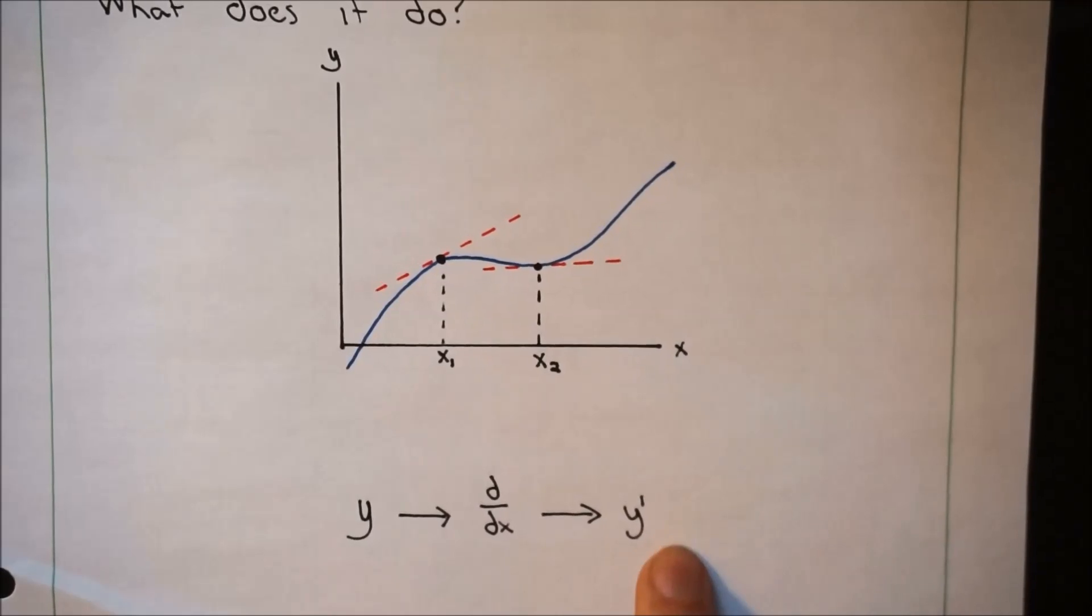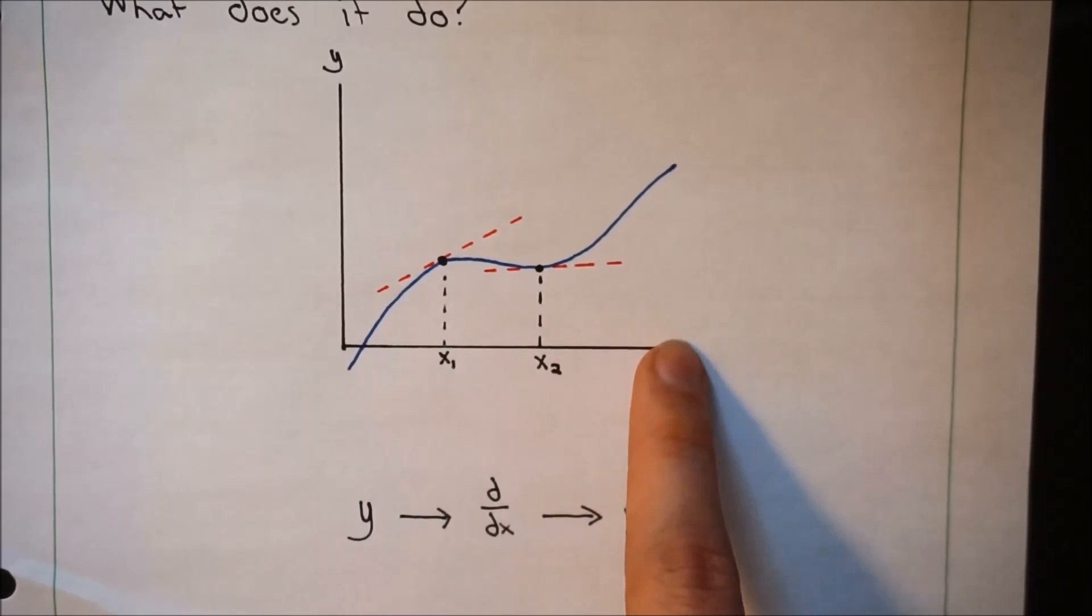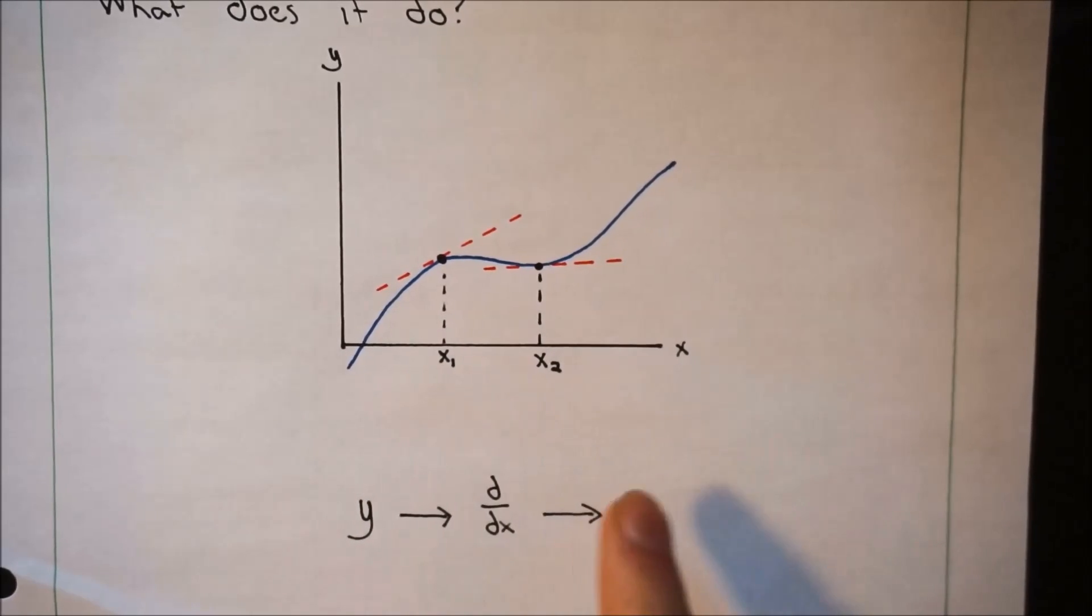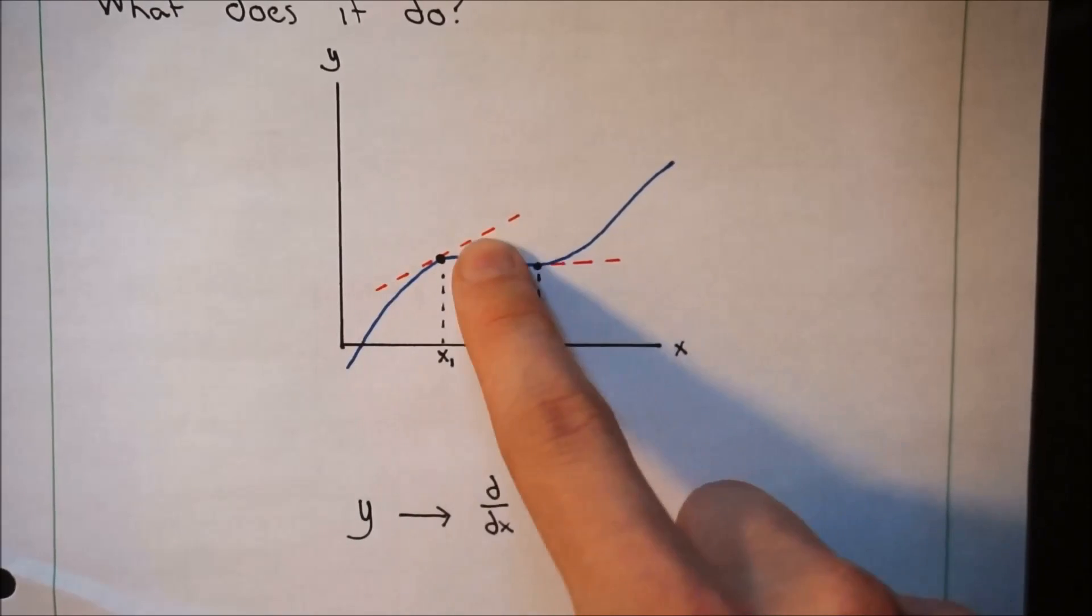And what you can do with y prime is take any point on this line. Let's say we want x1, let's say x1 is 2. You would take 2, put it into your y prime equation, and it would give you the slope of this tangent line at that point.